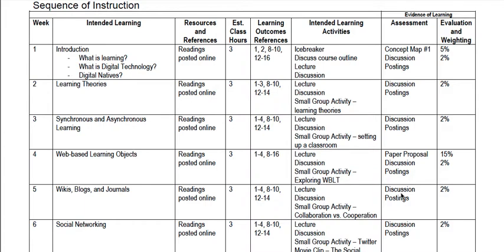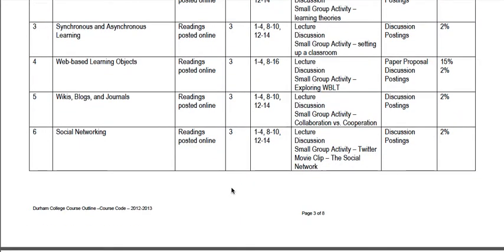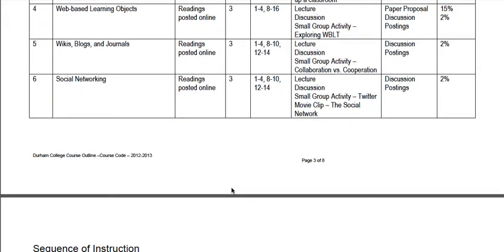You will have a concept map due at the beginning of the course and a concept map due at the end of the course. You'll also have a paper proposal due in week four, and then you'll submit your final paper which is due towards the end of the semester. Every class is going to follow that same type of structure. Week three covers synchronous and asynchronous learning. Week four is web-based learning objects. Week five is wikis, blogs, and journals.